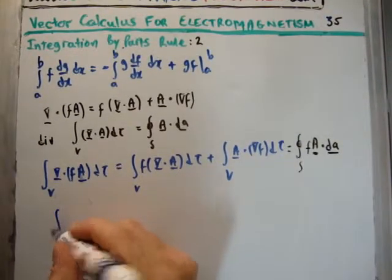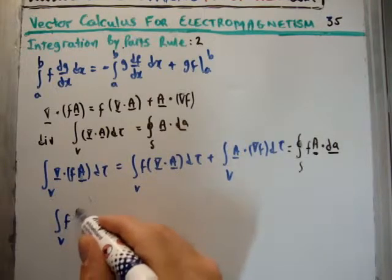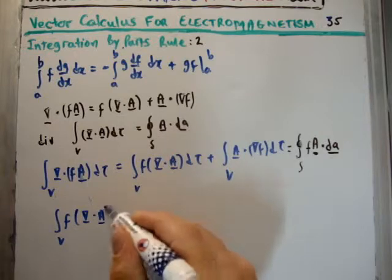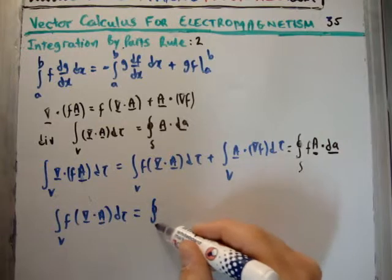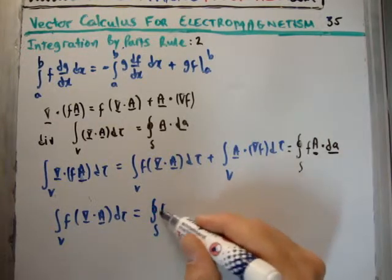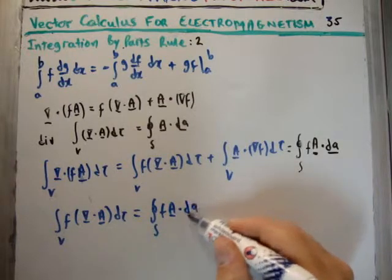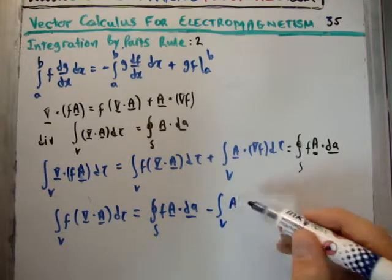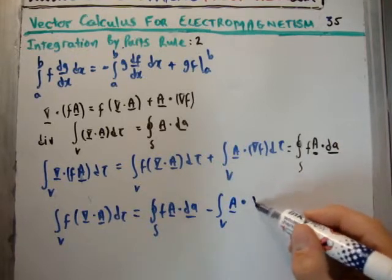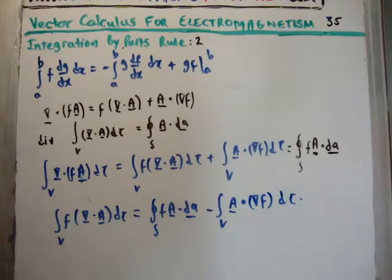So we're going to call this, if we ever apply this, integration by parts. So we integrate over the volume of a scalar function f multiplied by the divergence of a vector field A integrated dτ is the same thing as having this closed surface integral of the scalar function f multiplied by the vector field capital A dot dA, which is the infinitesimal area element, but we need to take away from that the integral over the volume of the vector A dot product with the gradient of f, and that's going to be over dτ.